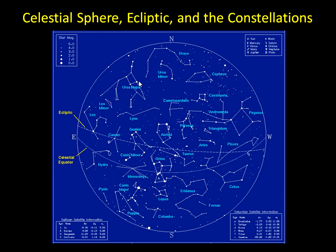So even though they look like they're right next to each other as viewed from Earth, they could be at very different distances from Earth and they really have no relation to each other. It's just how they appear from our location, Earth.